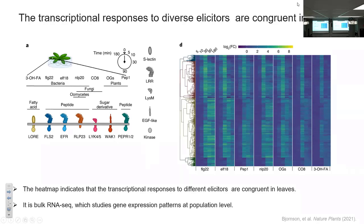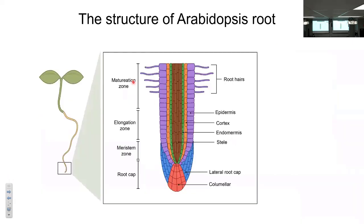Bulk RNA-seq studies gene expression pattern at the population level. Here shows the structure of Arabidopsis roots. In Arabidopsis roots, the roots can be classified into four root zones and two cell types. The root cap zone includes the lateral root cap and columella, the meristematic zone, elongation zone, and the maturation zone.